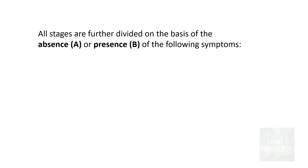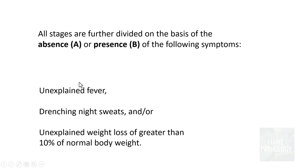All these stages are further divided based on the presence or absence of symptoms. If symptoms are absent it is denoted as A; if present it is denoted as B. The B symptoms are: unexplained fever, drenching night sweats, and unexplained weight loss which is often greater than 10% of normal body weight.